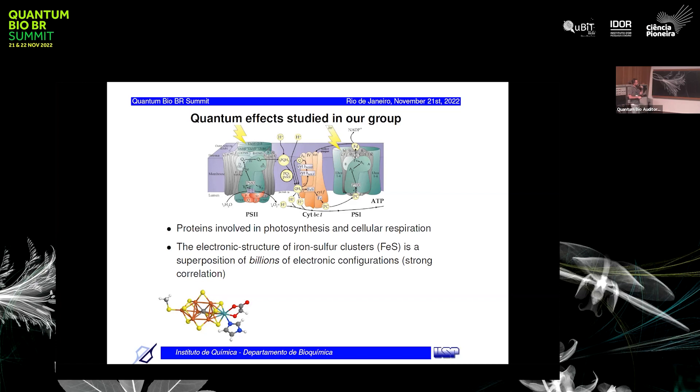There's an example of an iron-sulfur cluster here from the nitrogenase enzyme. These iron-sulfur clusters are responsible for the electron transfer for a lot of the processes being carried out in proteins involved in photosynthesis and cellular respiration. Their electronic structure is very, very difficult to understand, to calculate, because it's a superposition of billions, even more, electronic structures that arise from the strong correlation of the electrons, of the unpaired electrons in these clusters.